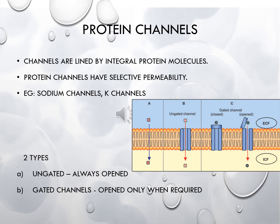Potassium channels permit only potassium ions to pass through, chloride channels allow only chloride ions, and likewise. These channels are named after the ions which are permitted to diffuse through them. Some protein channels continuously remain open and some channels are opened only when required — the majority of the time they remain closed. The continuously open channels are called ungated channels and the closed channels which open only when required are called gated channels.